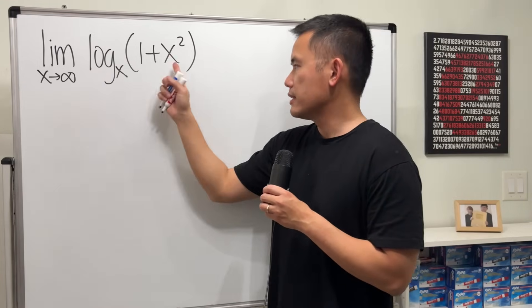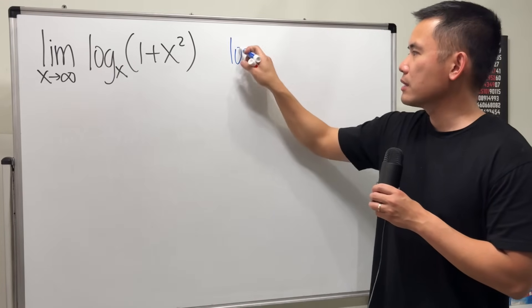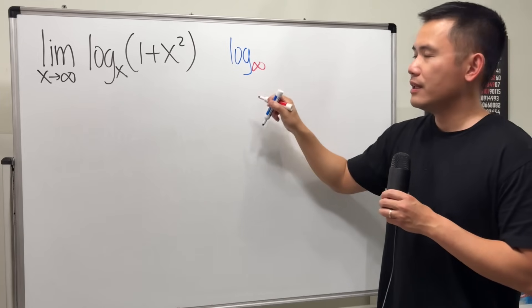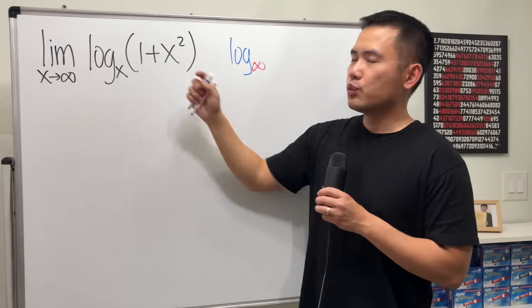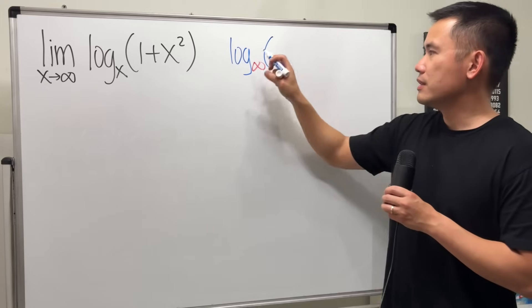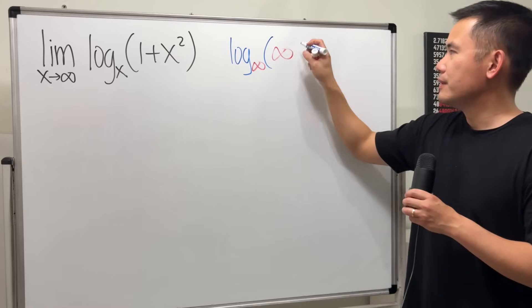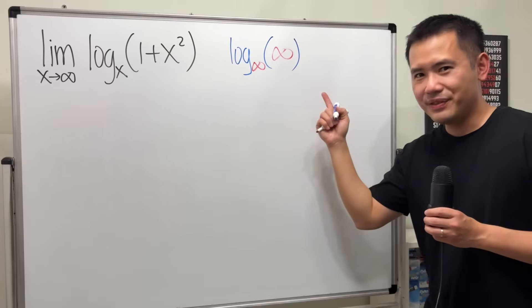If we put infinity into this x and that x, we will have log base infinity. And infinity squared plus 1 is also infinity. So this is log base infinity of infinity. What's the answer for this?